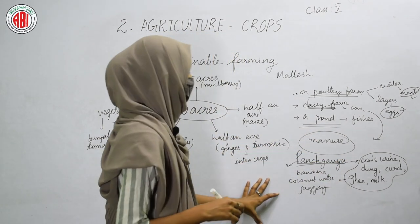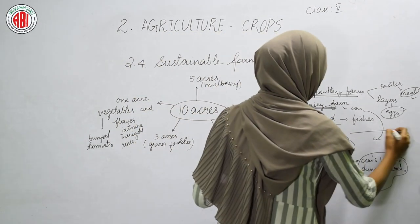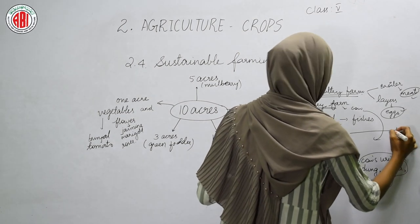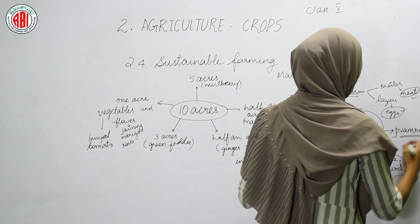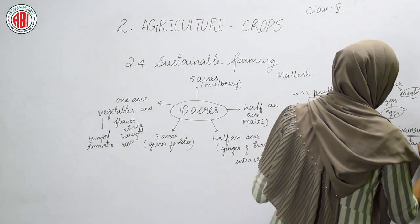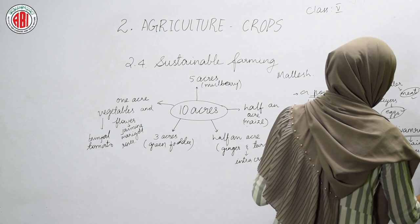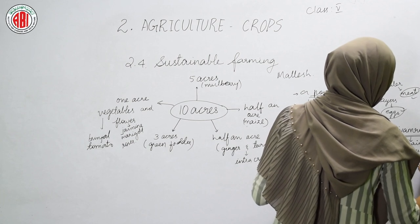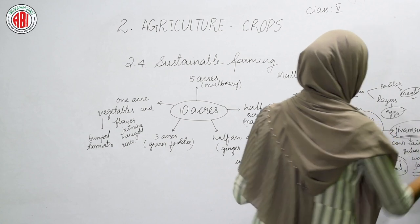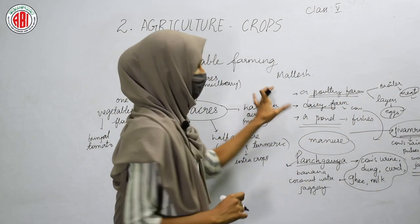Another manure that helps increase crop yield is called Jiva Root. To make Jiva Root you need cow's urine, cow dung, pulses powder, water, and jaggery. By mixing all these materials you can make the manure named Jiva Root.